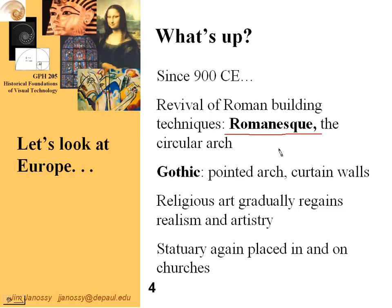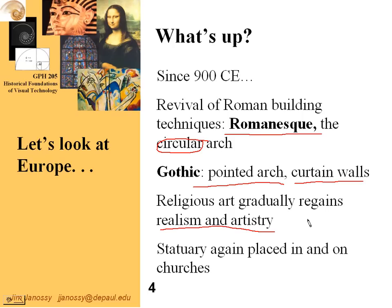We've already talked about Romanesque architecture based on the circular arch. The era we're now moving into is noted for the pointed arch, which allowed arches to become higher. Curtain walls — that is walls where the main function was to screen out the weather and not necessarily to hold up the roof — and we'll see how that develops with a technique known as flying buttresses. Religious art gradually regains realism and artistry, and we'll talk about the rationalization for that in the face of many hundreds of years of tradition where art was intended only to communicate biblical stories and religious ideas to illiterate people. And finally, statuary again beginning to be placed in churches after many hundreds of years of not being used in that capacity.